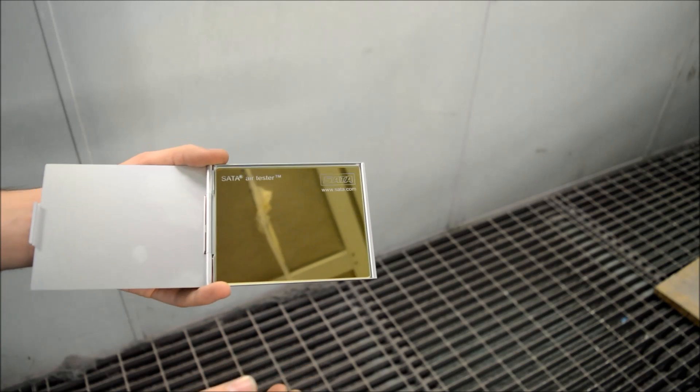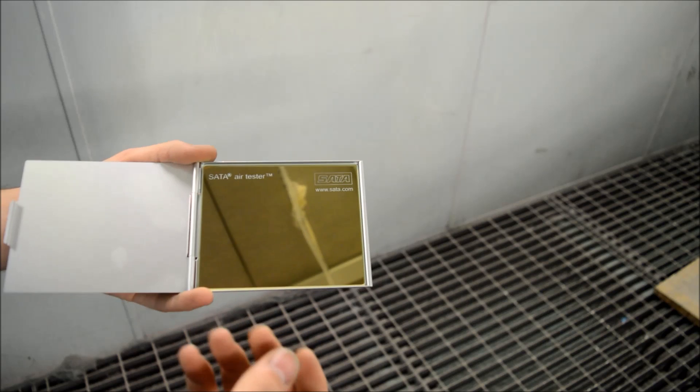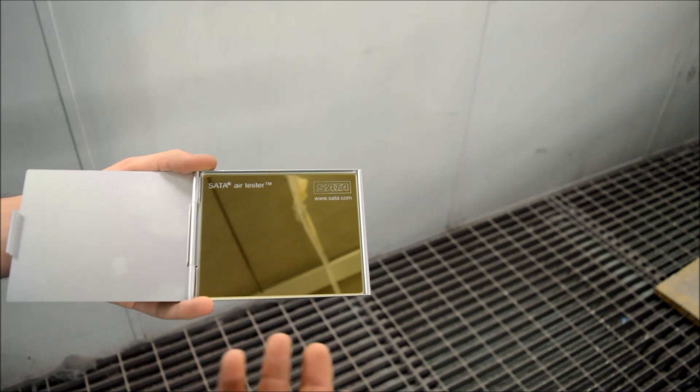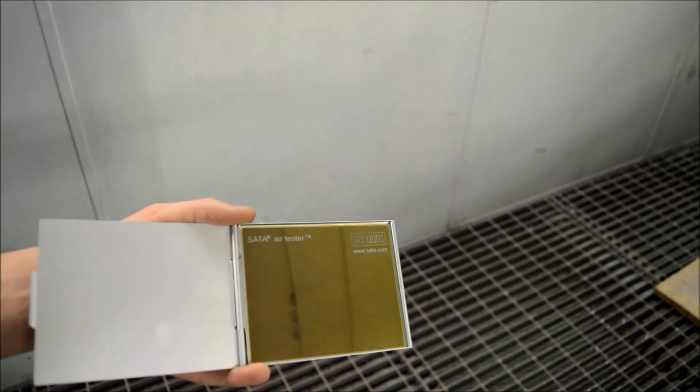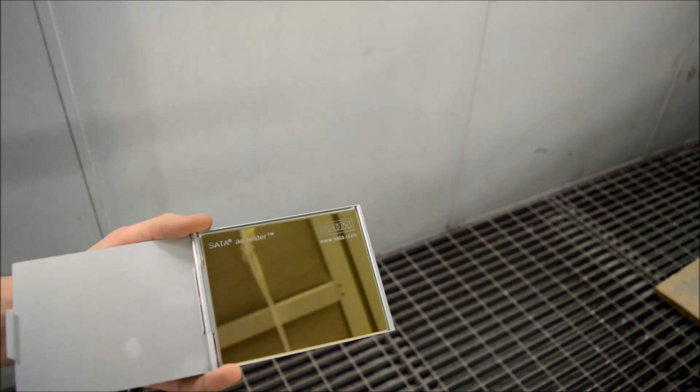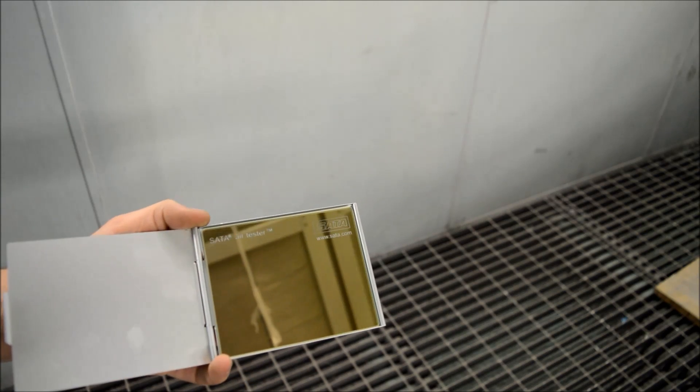The mirror itself is actually very deep. With the glass being so deep, it helps highlight those imperfections or anything flowing through the airlines. Let's go ahead and use this to see if we can pick anything up through our airlines.